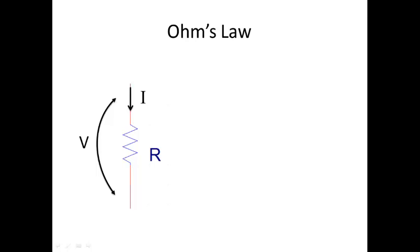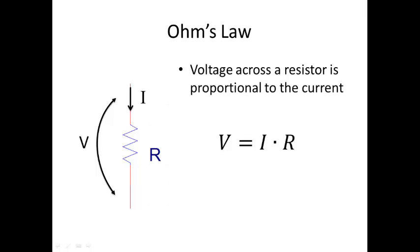Let's consider we have a resistor R and let's say that we have some current flowing through R — we're going to call this current I. Let's assume that we have a voltage across the terminals of R that is equal to V volts. Ohm's law basically says that the voltage V across a resistor is proportional to the current, so V can be computed as I times R, where R is the value of the resistance.